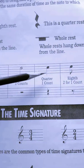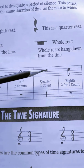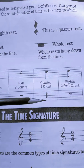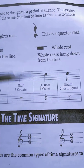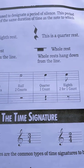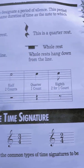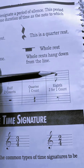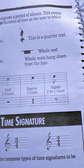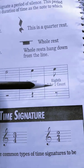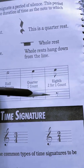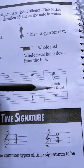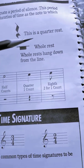A quarter note lasts for one count or one beat, and its equivalent rest will imply silence for one beat. And finally, an eighth note lasts for half a beat — two for one count — and its equivalent rest will imply silence for half a count.